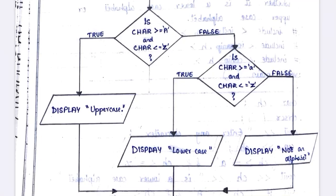Now consider small letter 'p'. First it checks whether small 'p' comes between capital 'A' and capital 'Z' — it does not, so it is false. It moves to the next else-if ladder and checks whether small 'p' comes within small 'a' and small 'z'. That is true, so it displays 'it is a lowercase'.